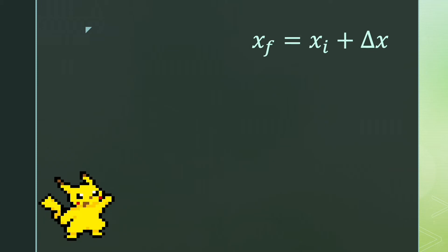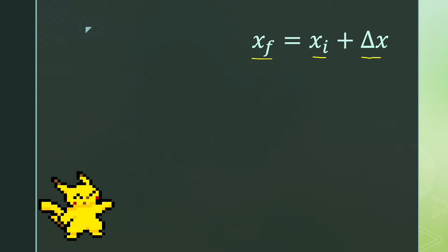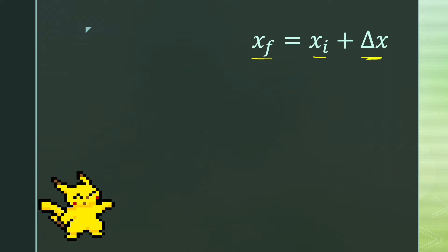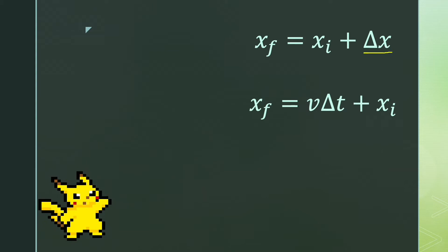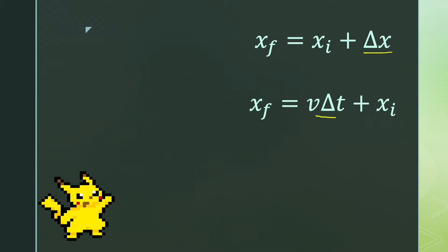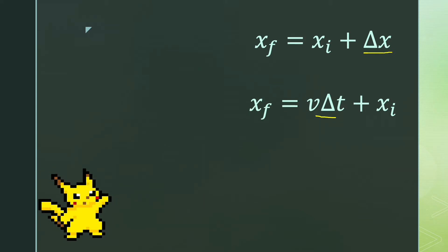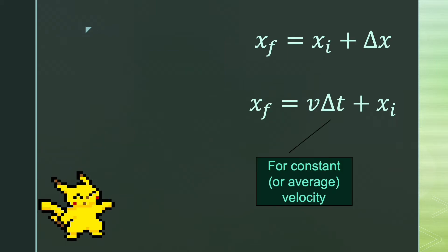Here's a simple formula: final position equals initial position plus change in position. Rearranging, we replace the change in position with velocity times time. Velocity times time is displacement, but that's not true if you're talking about a varying velocity when there's an acceleration. So this equation is for constant velocity or average velocity.